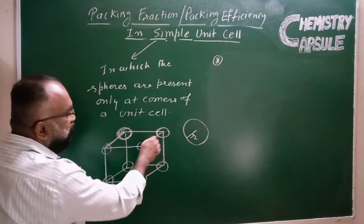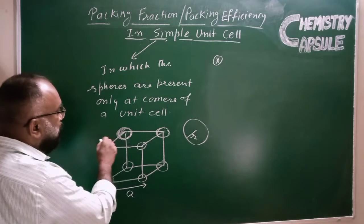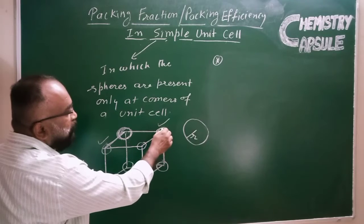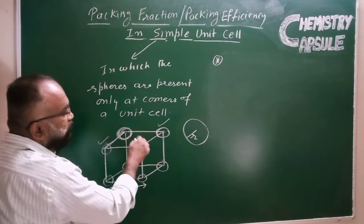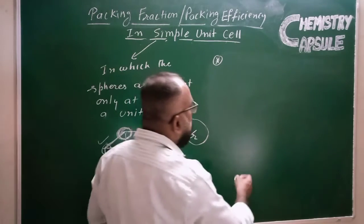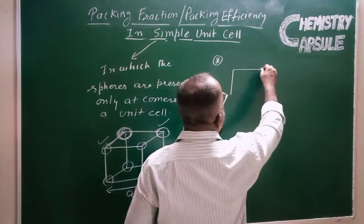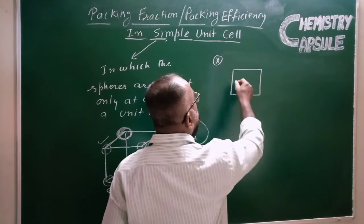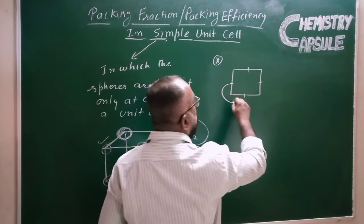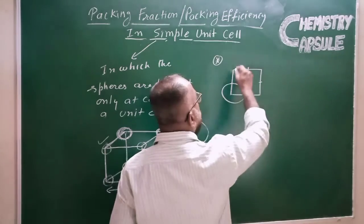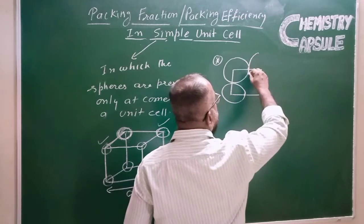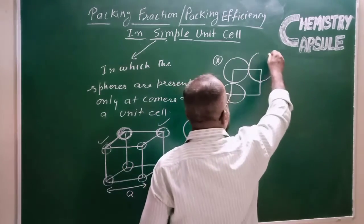We will make a small unit cell showing the spheres at the corners of each layer. The spheres at the corners are present in contact with each other. This is a diagram showing the mid portion of the face, and here we draw the spheres at each corner. This shows the sphere present at one corner of the unit cell.